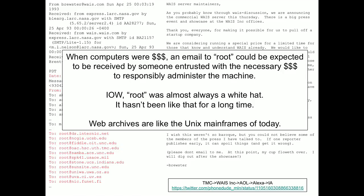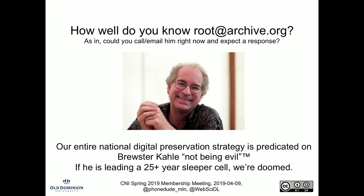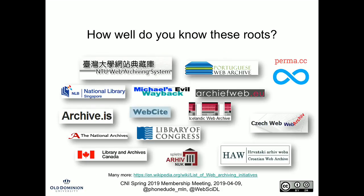Web archives are like the Unix mainframes of the 80s and 90s — we implicitly trust root. How well do you know root at archive.org? I don't mean did you meet Brewster at a conference once. I mean do you know him well enough that if you emailed or called him, he would reply? Our entire national digital preservation strategy is dependent on Brewster Kahle not being evil. If he's running a sleeper cell, we're all doomed because he's got all of our stuff. How well do you know root at all these other archives? There's at least one of them you absolutely should not trust. We can no longer implicitly trust root at archives.